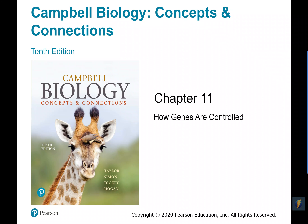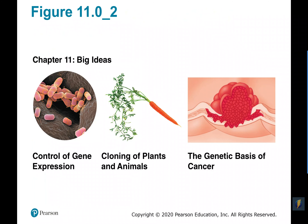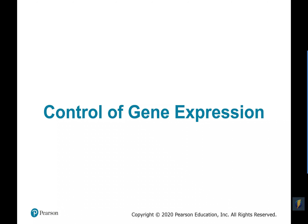Welcome students to Chapter 11, which focuses on how our genes that provide us our heredity and inheritance are regulated and controlled by the body. We're going to look at three main topics: the control of gene expression, how cloning works in both plants and animals, and the genetic basis of cancer, which is uncontrolled growth. We'll start with the first big idea: how living organisms control and regulate the expression of their genes.